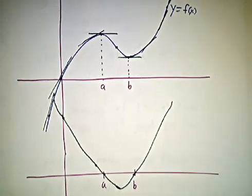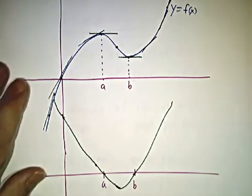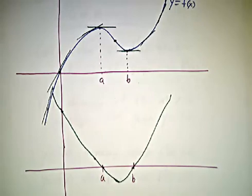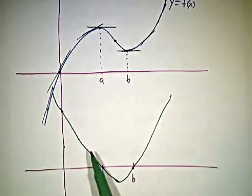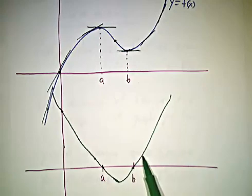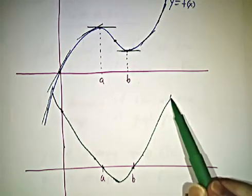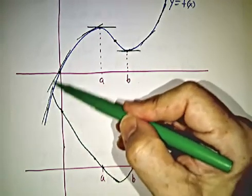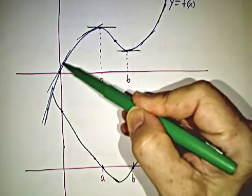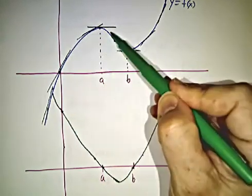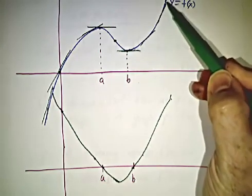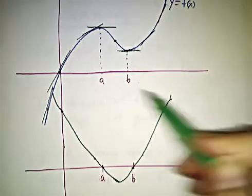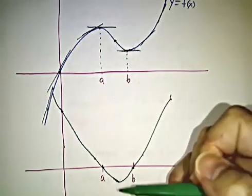So roughly speaking — we don't have an exact formula — we know that the derivative is large and positive, then small and positive, then negative, then small and positive, then large and positive again. Because the original curve goes: steep and uphill, shallow and uphill, downhill, shallow and uphill, steep and uphill. Steep and uphill means a large positive derivative. Downhill means a negative derivative.